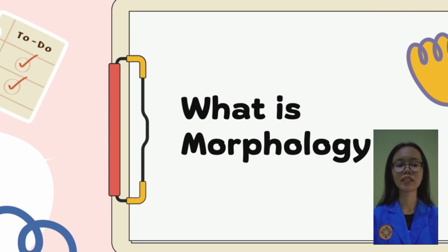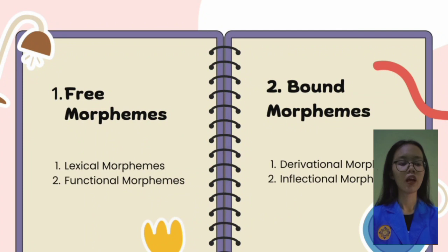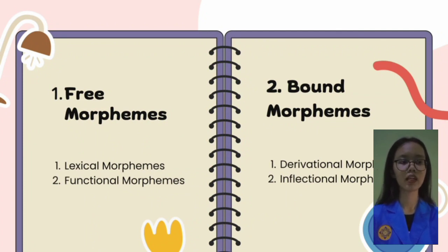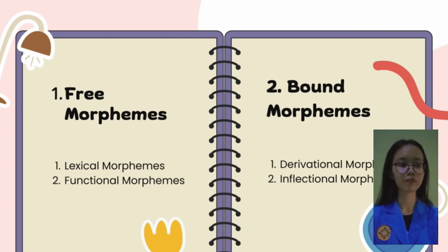From this example, we can make a broad distinction between two types of morphemes. The first is free morpheme and the second is bound morpheme.